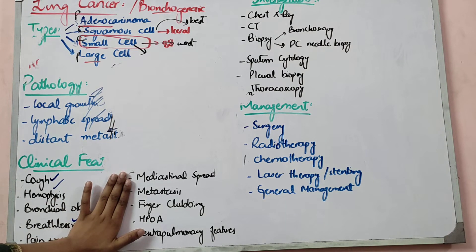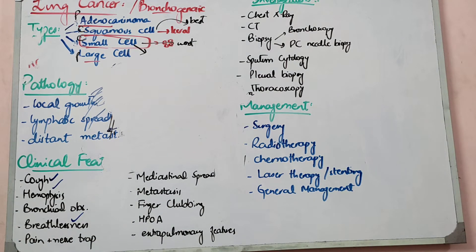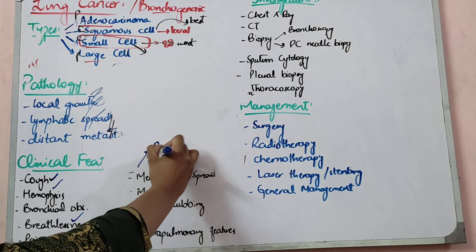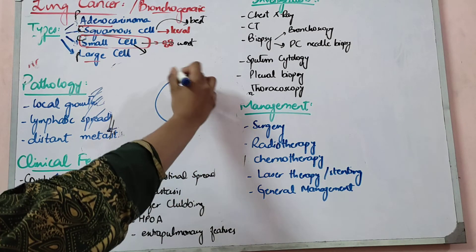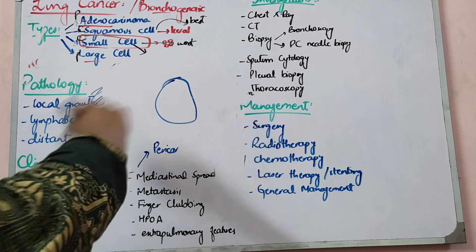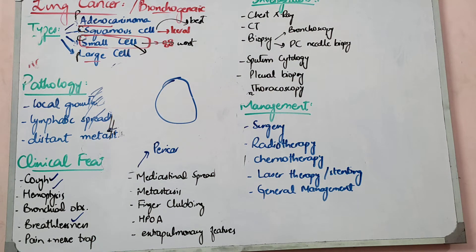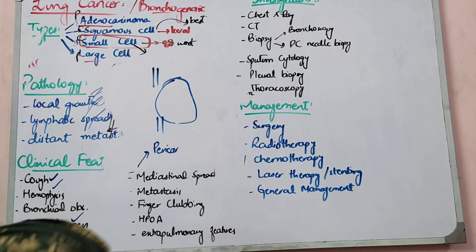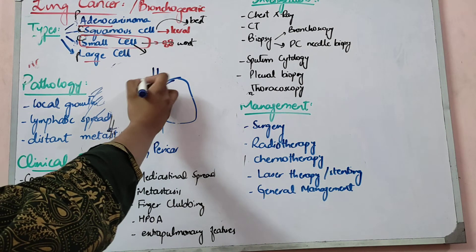Mediastinal spread means there is no structure that cancer cannot invade. In the lung, there is the heart and major vessels. If the heart is involved, the pericardium is first affected — it can cause pericarditis or a pericardial effusion.